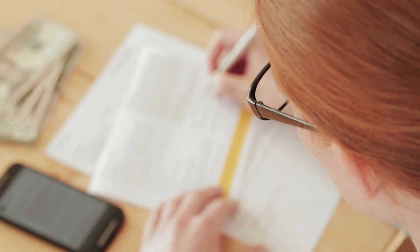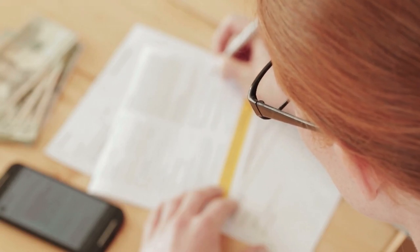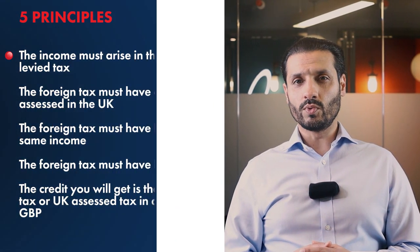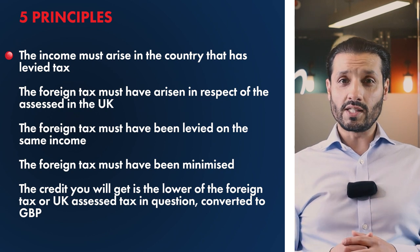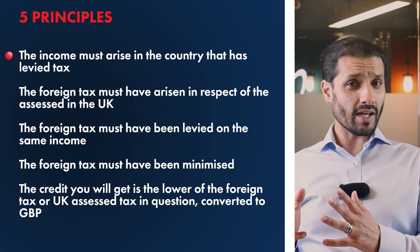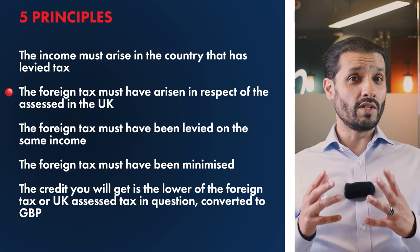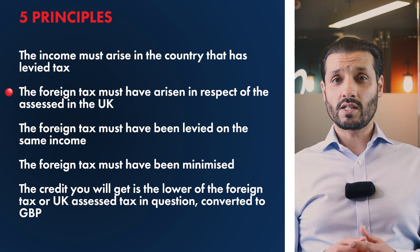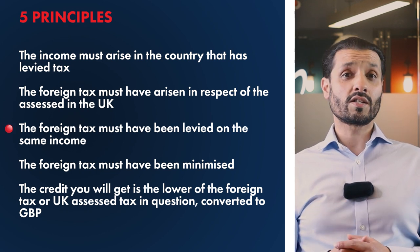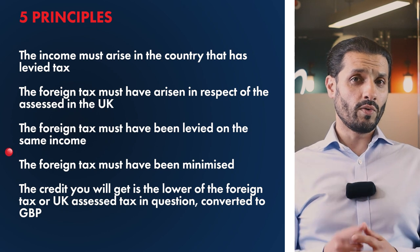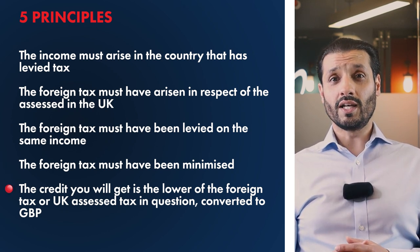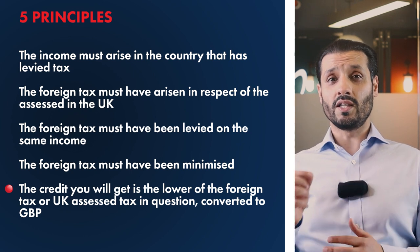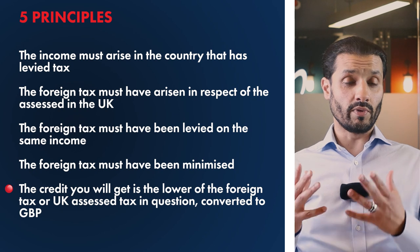If after applying any available exemptions and restrictions your foreign income — whether in full or in part — is suffering double taxation, HMRC will usually allow double tax relief for the foreign tax paid against a UK tax liability by granting what's known as a credit. However, there are five principles that must be met: one, the income must arise in the country that has levied the tax; two, the foreign tax must have arisen in respect of the same amount of income being assessed in the UK; three, the foreign tax must have been levied on the same income; four, the foreign tax must have been minimized; and five, the credit you will get is the lower of the foreign tax or UK assessed tax in question, converted to GBP — that's Great British pounds.